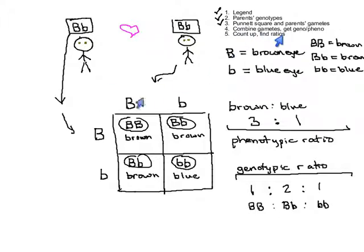Step four was combining the gametes, and that's where we went through and said, okay, this kid got Big B from dad, Big B from mom. That tells us what their genotype is. And we did that for each combination. Here was Big B from dad, Little B from mom, Little B from dad, Big B from mom, and Little B's from both.